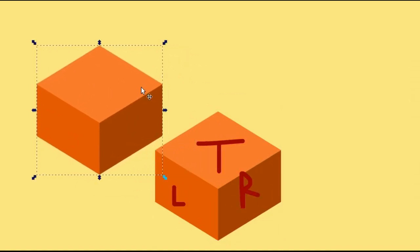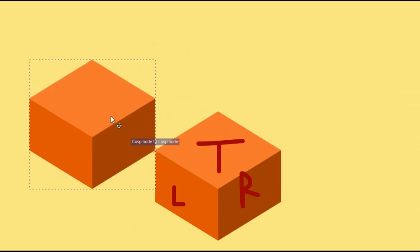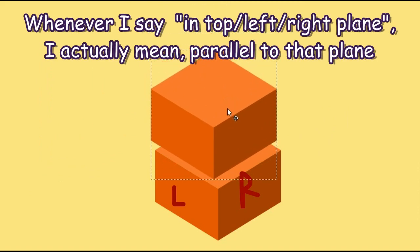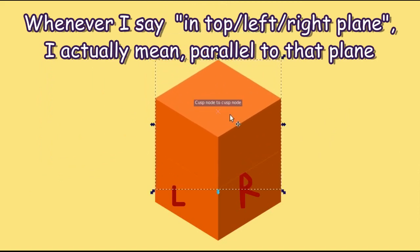So let's say if I have another object of the same size, now the illusion of so-called depth would depend on where you place this object. So if I just bring it to the front and place it in the top plane, you can see it creates an illusion that it's on top of the other cube.